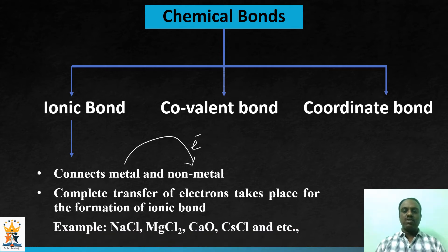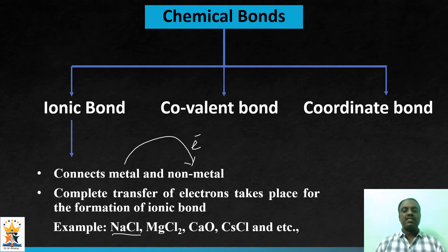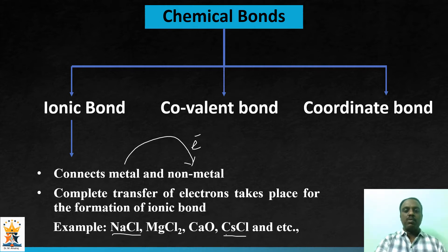Some typical examples of ionic compounds include sodium chloride. We have discussed the structure of sodium chloride in a previous video — the link is given in the description. Here we are going to discuss the structure of cesium chloride.